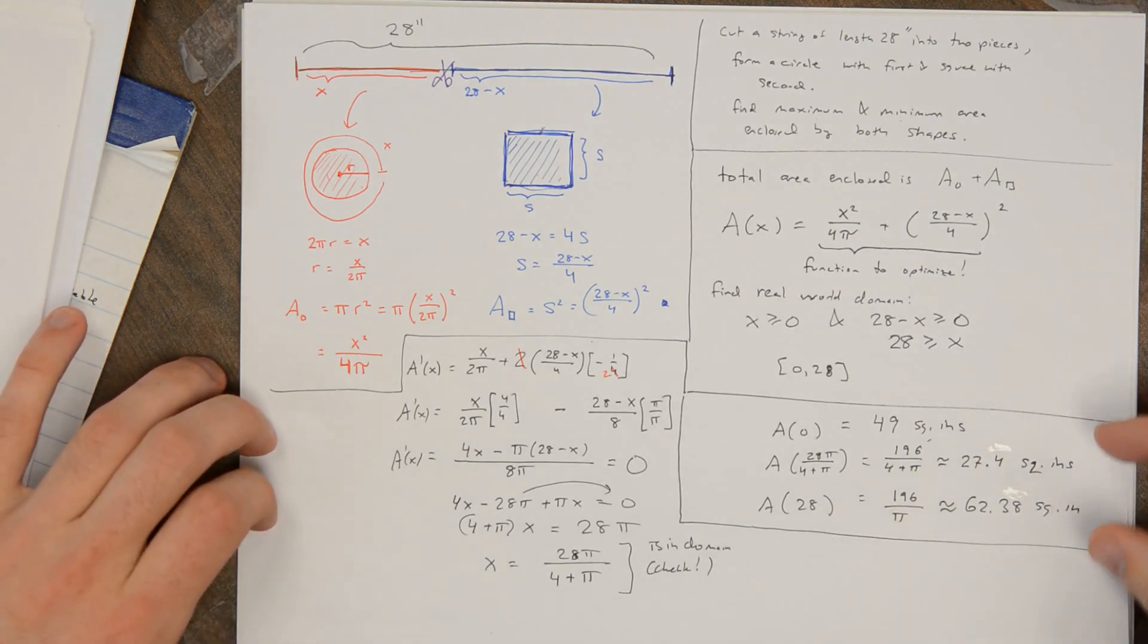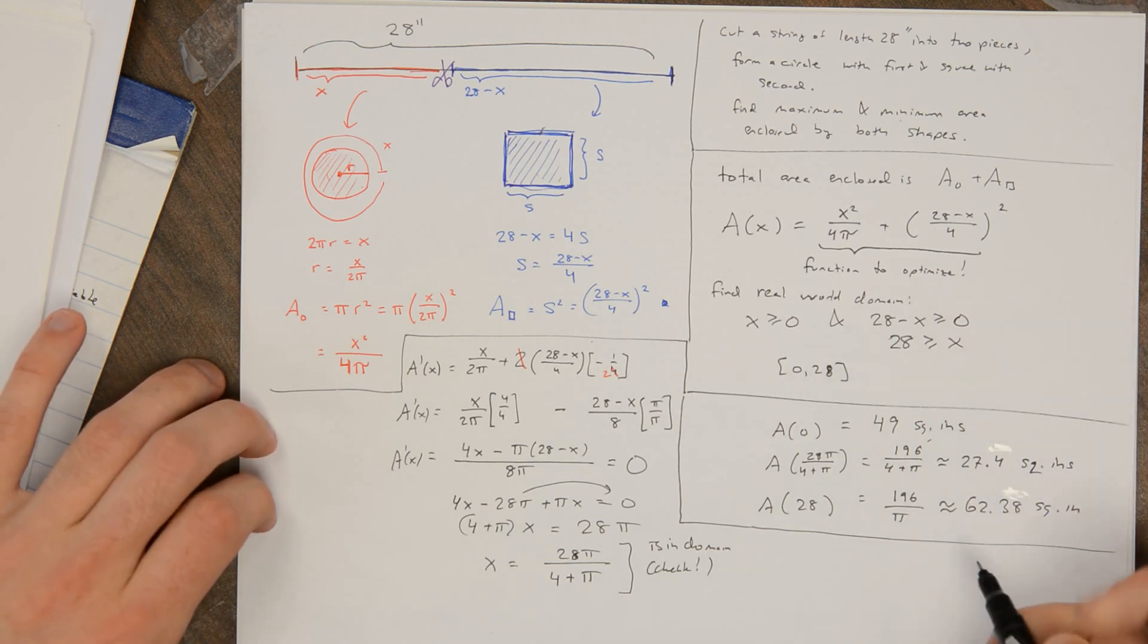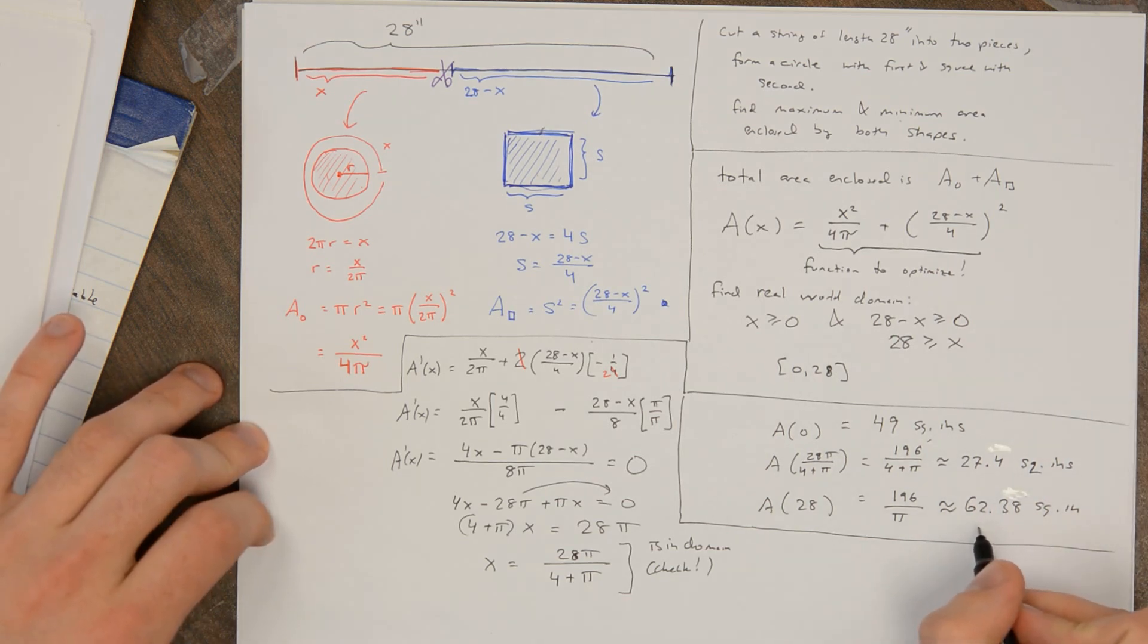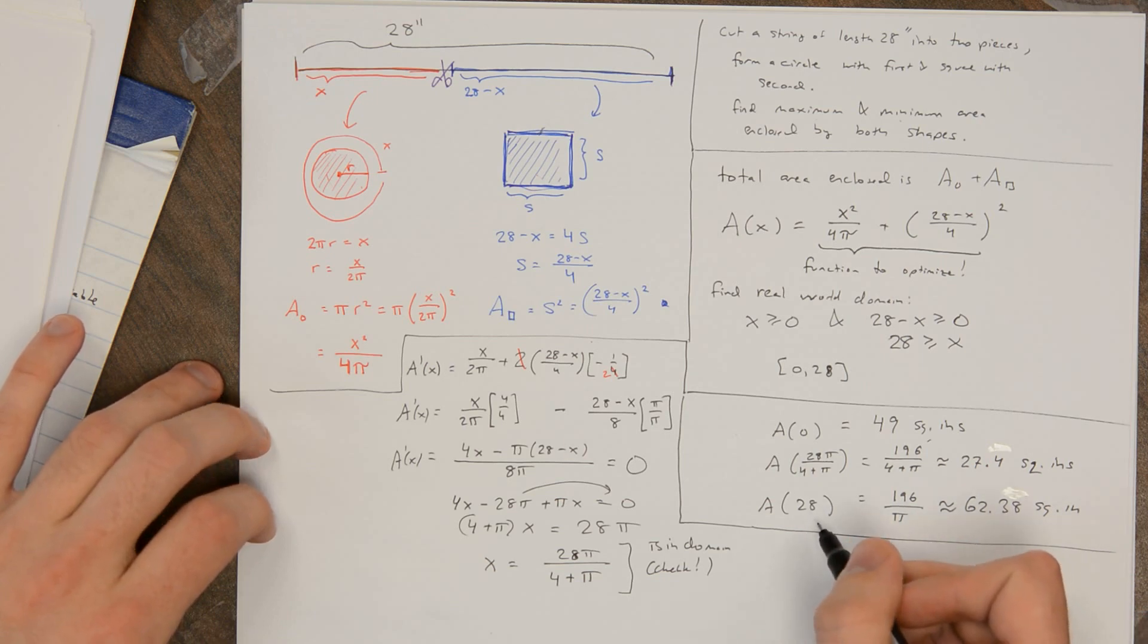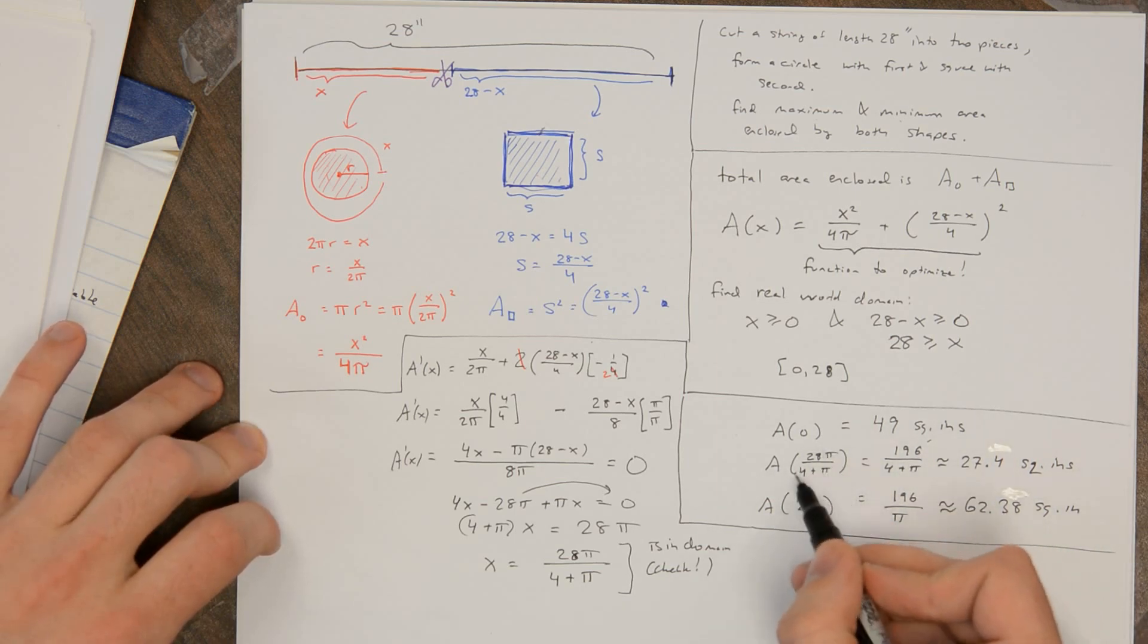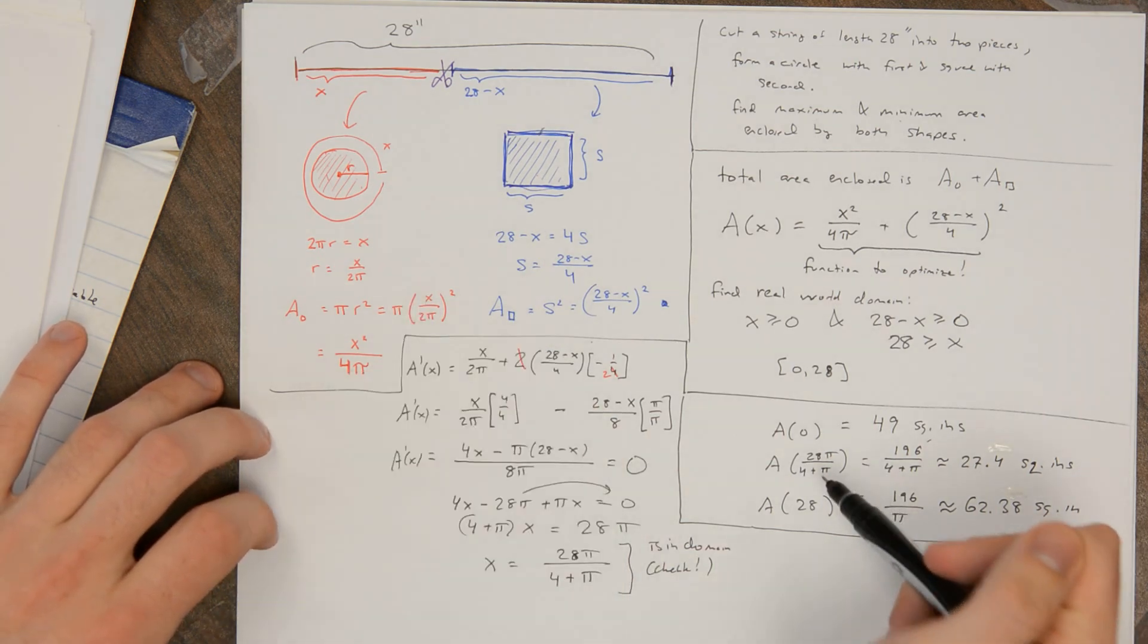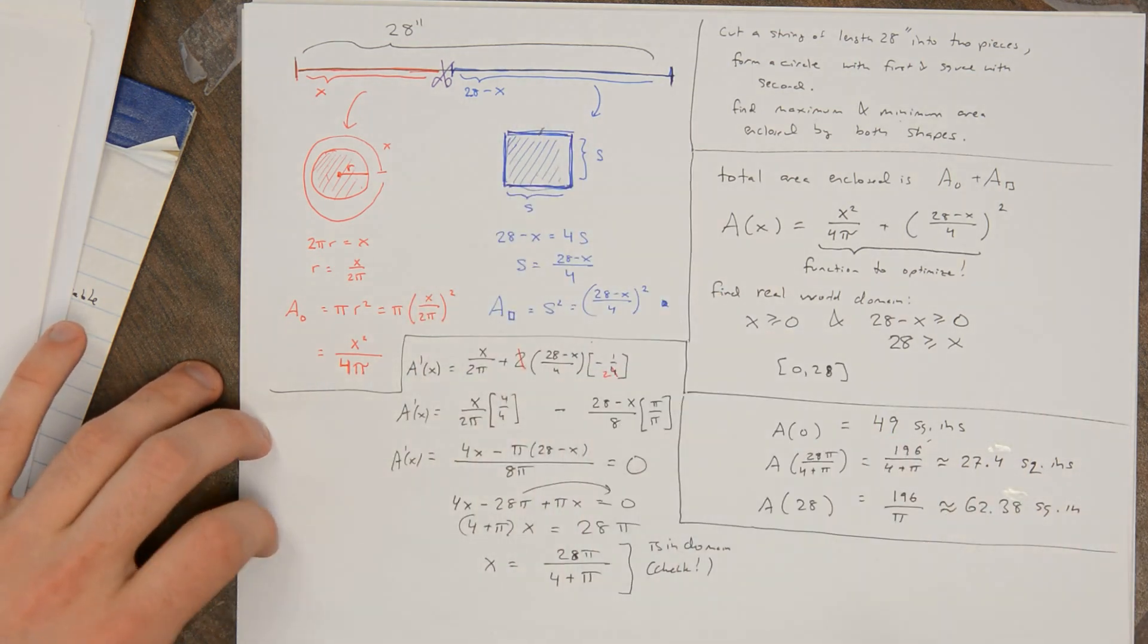And this contains all the information you know to optimize it. To maximize the area, this is the maximal area, 196/π, and you should just build a big circle. And to minimize the area, this is the minimal area, 196/(4 + π), and this is how much string you should use for the circle. And then 28 minus that is how much string you're going to use for the square.